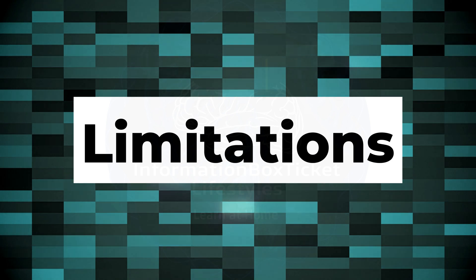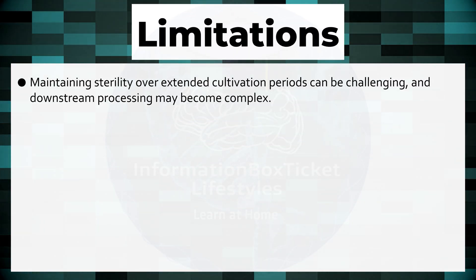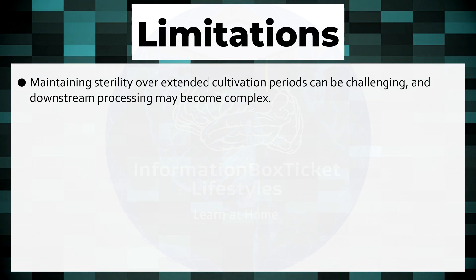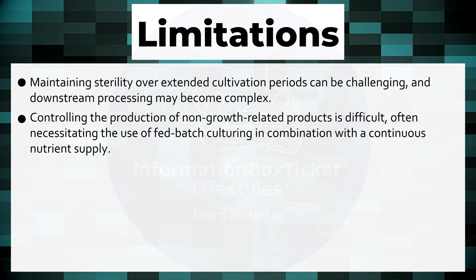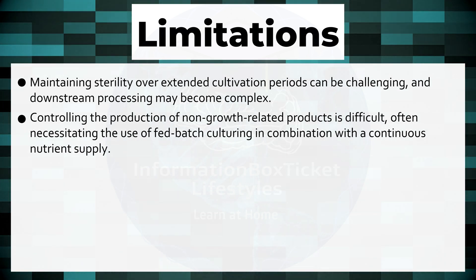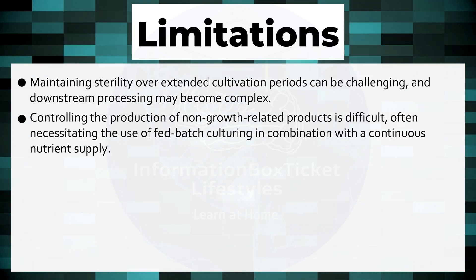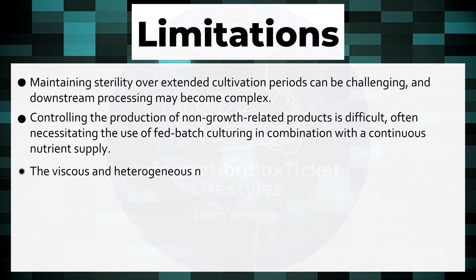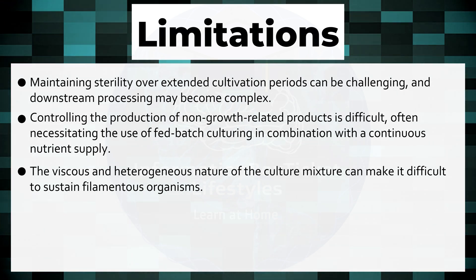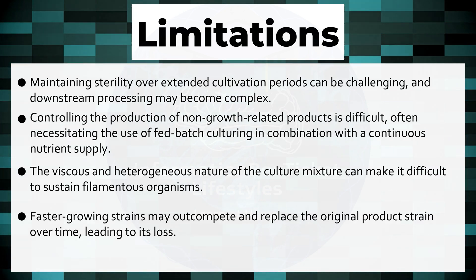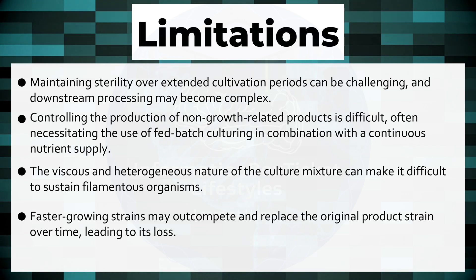Limitations of Continuous Culture. Maintaining sterility over extended cultivation periods can be challenging, and downstream processing may become complex. Controlling the production of non-growth-related products is difficult, often necessitating the use of fed-batch culturing in combination with a continuous nutrient supply. The viscous and heterogeneous nature of the culture mixture can make it difficult to sustain filamentous organisms. Faster-growing strains may out-compete and replace the original product strain over time, leading to its loss.